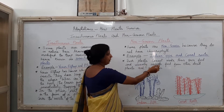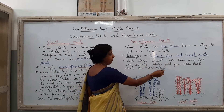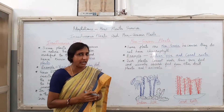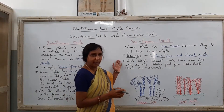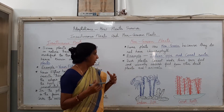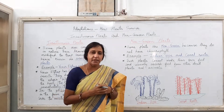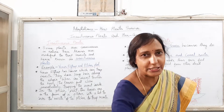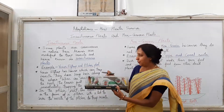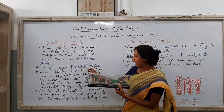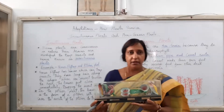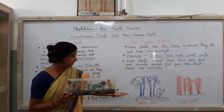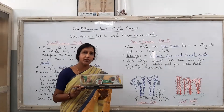Such plants cannot make their own food and usually absorb food from other dead plants and animals. As they are not having chlorophyll, how would they make their own food? Usually they absorb the food from other plants and animals. So this is how you have learnt today about the features of the insectivorous plants, as shown with the help of a model — the Venus flytrap and the pitcher plant — and the non-green plants, drawn here as Indian pipe and coral roots.